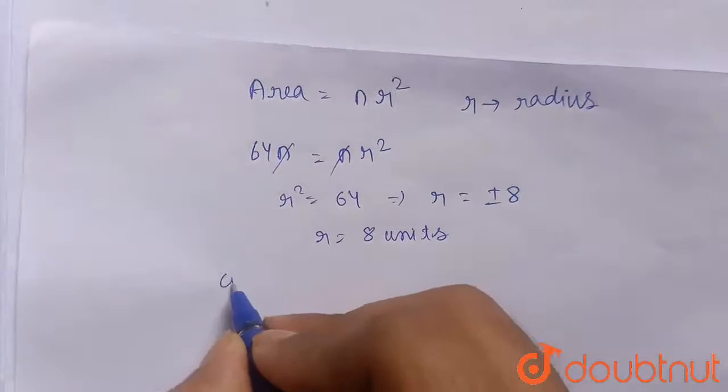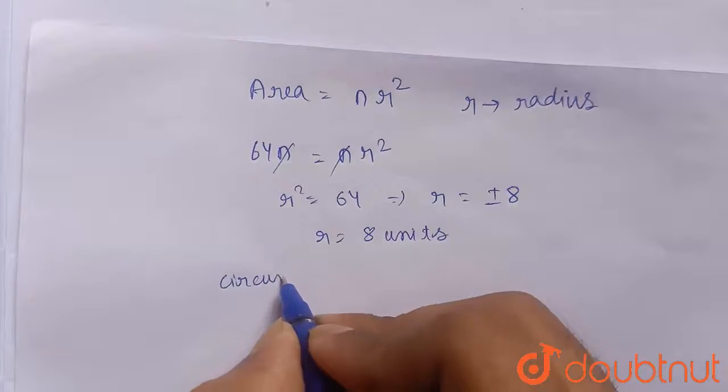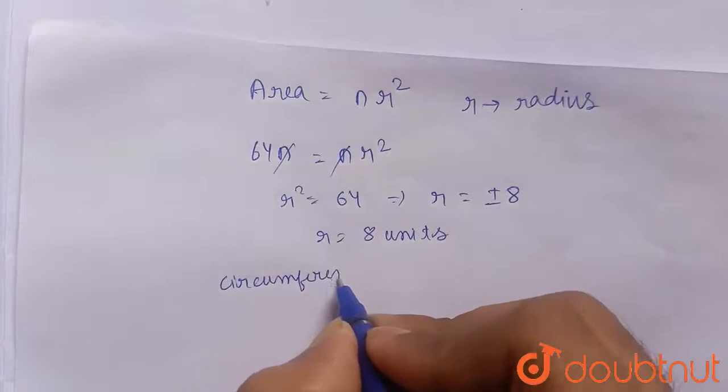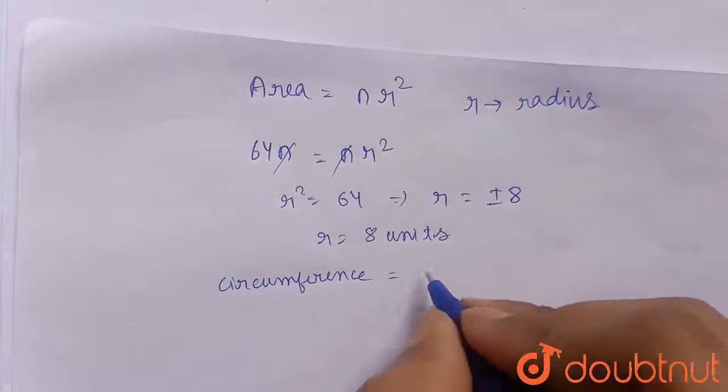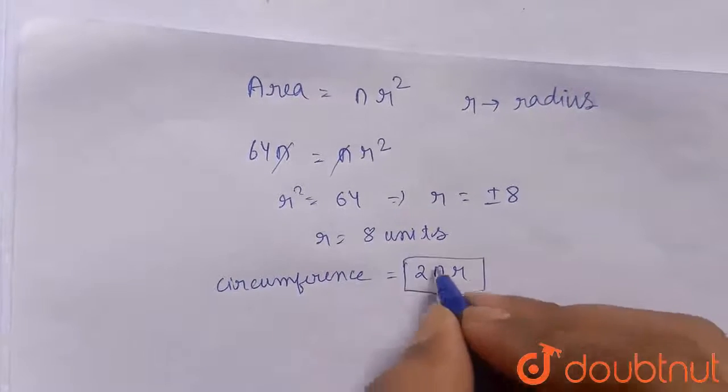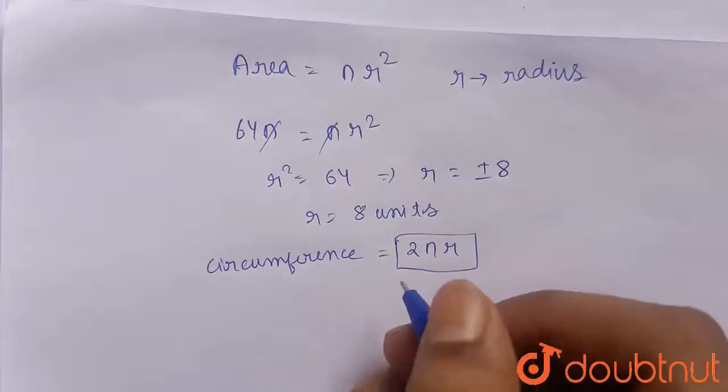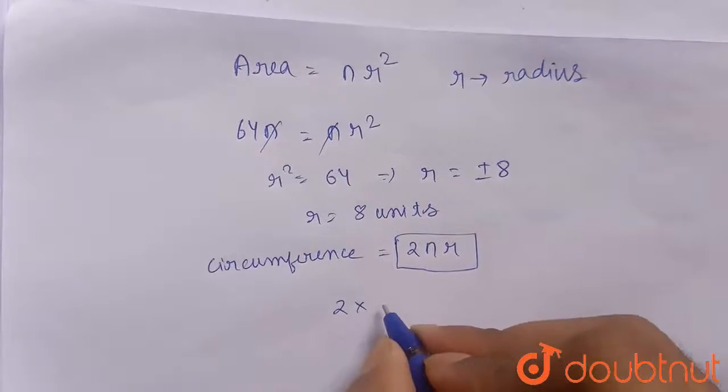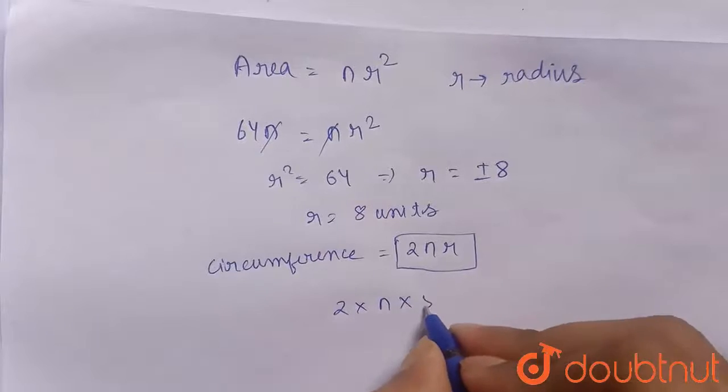What is the circumference of the circle? It will be 2πr. This is the formula, where r is again the radius of the circle. So 2 times π times 8, that means 16π.